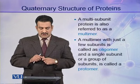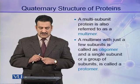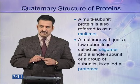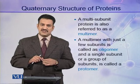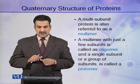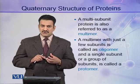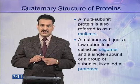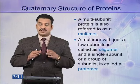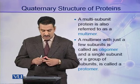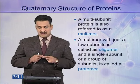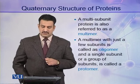A multi-subunit protein is also referred to as a multimer because it contains many subunits. If a multimer contains few subunits, it is called an oligomer. A single subunit or a group of similar subunits is called a protomer.